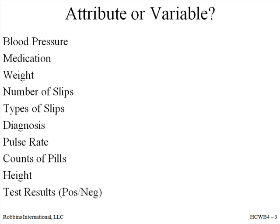Let's go slow as we answer this question for each item. Pause the video in between if we are going too fast. Blood pressure — variables data, as we measure this. Medication — attribute data, as different medications will be in different categories.